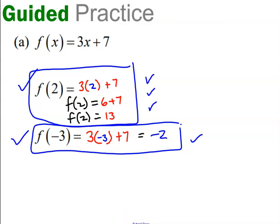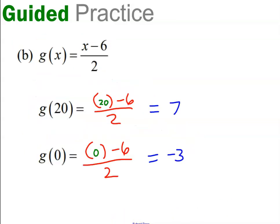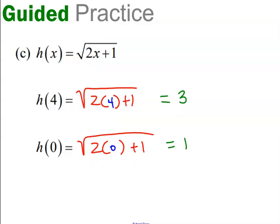Let's take a look at letters b and c. How did you do? So that's the easy part of evaluating — I give you a number, you put it in, and you see what comes out.